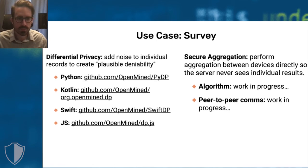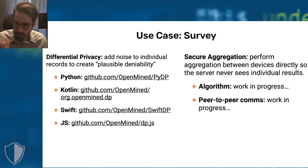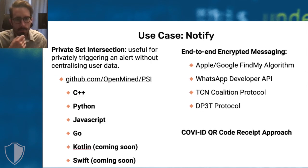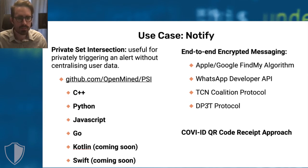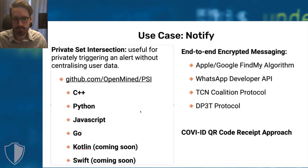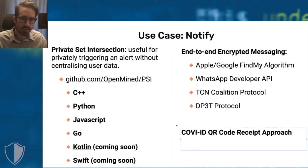There are other protocols proposed by TCPN and DP3T that are very close to the one Apple and Google ultimately adopted. There's also a QR code approach that CoVID that Covey ID has been working on. This QR code approach is particularly interesting — Covey ID is a team based in South Africa where a very high percentage of the country doesn't have a smartphone, so they can't use the Apple-Google algorithm.